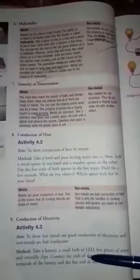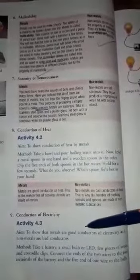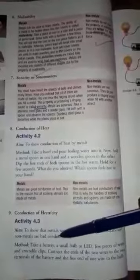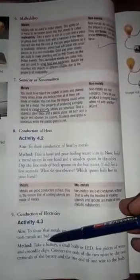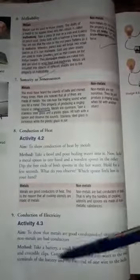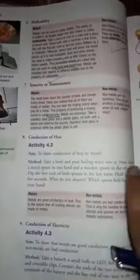Next is conduction of electricity. To prove that metals are good conductors, take a battery, small bulb, LED, few pieces of wire, and crocodile clips by which the apparatus is joined. Connect the end of the two wires to the main terminals of the battery and the free end of one wire to the bulb. See here in image 4.6.